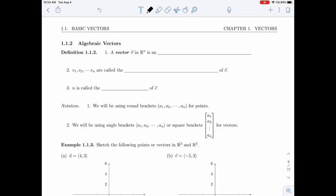In this video, we'll be defining vectors algebraically. So in definition 1.1.2, a vector V in Rn is an ordered list of n real numbers.